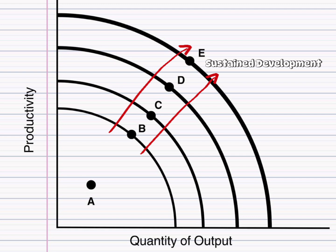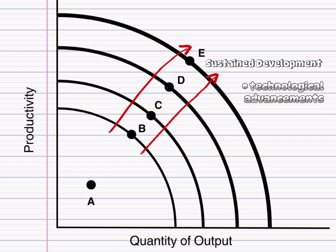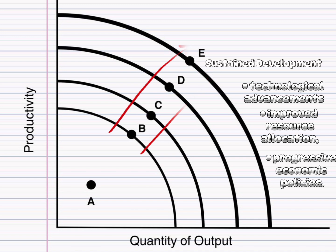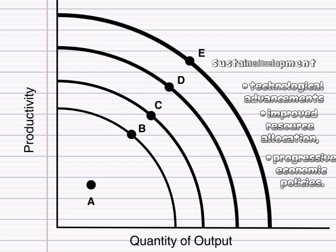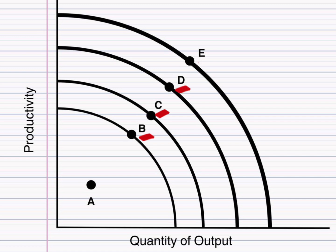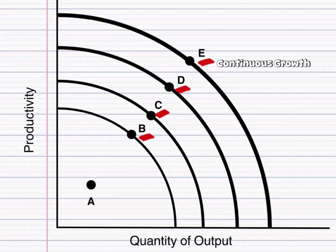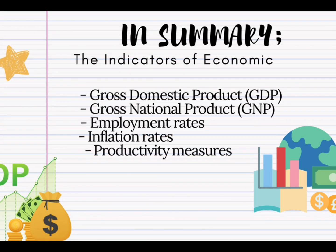The economy continues to grow, expanding its productive capacity. This sustained growth may be attributed to factors like technological advancements, improved resource allocation, and progressive economic policies. The progression from point B to points C, D, and E suggests that the economy is on a trajectory of continuous growth. This sustained development implies that the nation has successfully overcome its stagnation, utilizing resources more efficiently and realizing its economic potential over time.